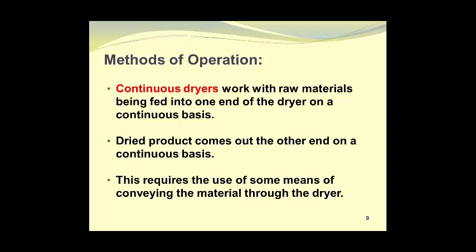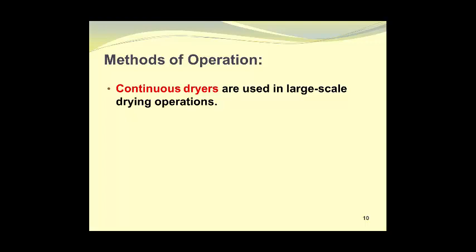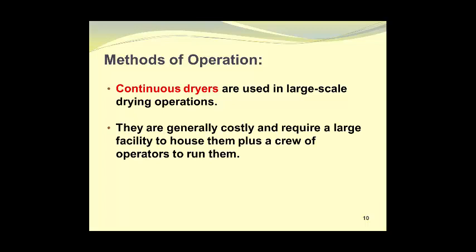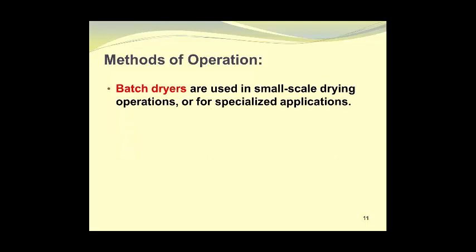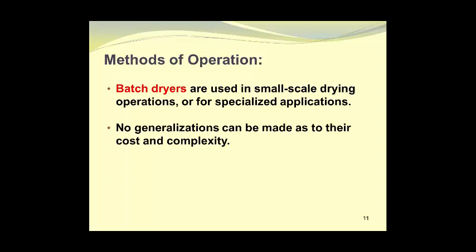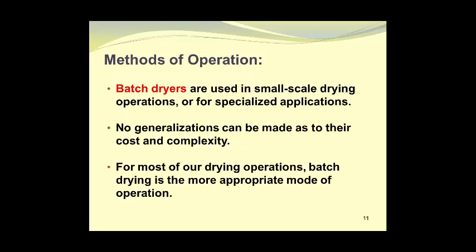Continuous dryers require some means of conveying the material through the dryer. They are used in large-scale drying operations, are generally costly, require a large facility to house them, plus a crew of operators to run them. Batch dryers are used in small-scale drying operations or for specialized applications. No generalizations can be made as to their cost and complexity. For most of our drying operations, batch drying is the more appropriate mode of operation.